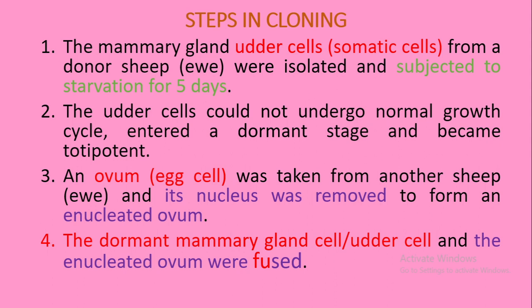The steps in cloning: Step one — mammary gland cells, that is somatic cells, from a donor sheep called Eve were isolated and subjected to starvation for five days. The mammary gland udder cells could not undergo a normal growth cycle. Step two — the cells entered a dormant, inactive stage and became totipotent. Step three — an ovum was taken from another sheep and its nucleus was removed to form an enucleated ovum.